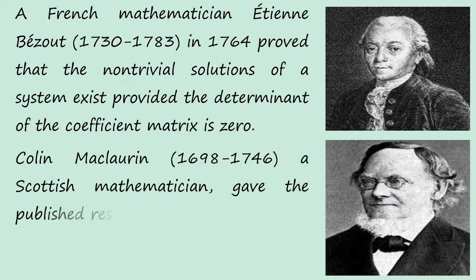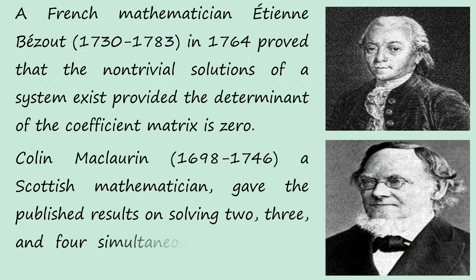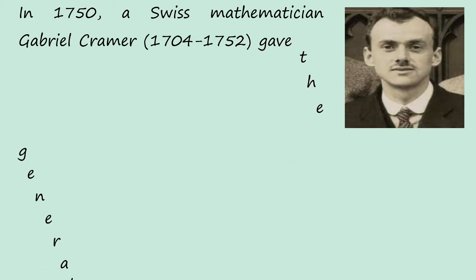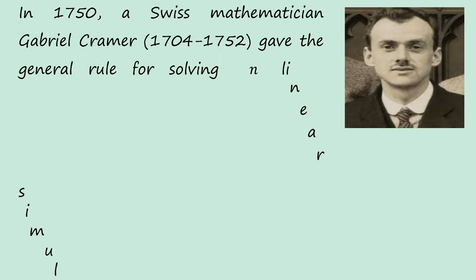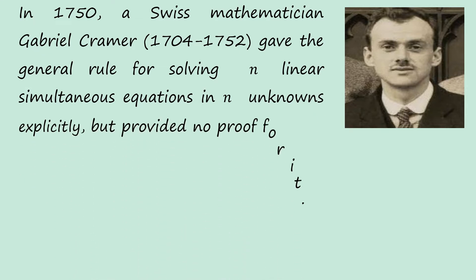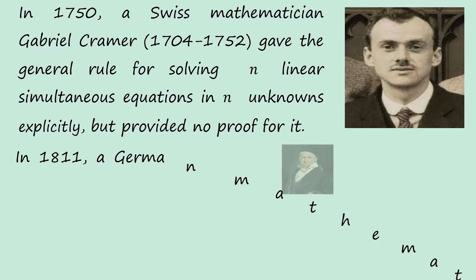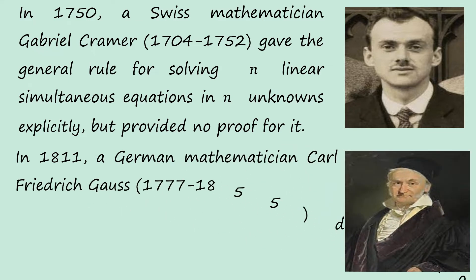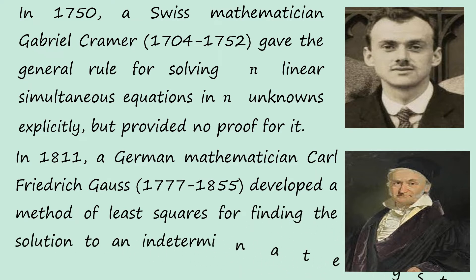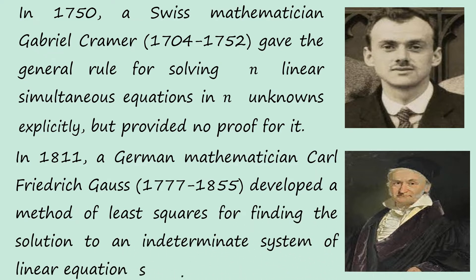Colin Maclaurin, a Scottish mathematician, gave published results on solving two, three, and four simultaneous equations via resultants, which are now known as determinants. In 1750, a Swiss mathematician, Gabriel Cramer, gave the general rule for solving n linear simultaneous equations in n unknowns explicitly, but provided no proof for it. In 1811, a German mathematician, Carl Friedrich Gauss, developed a method of least squares for finding the solution to an indeterminate system of linear equations.